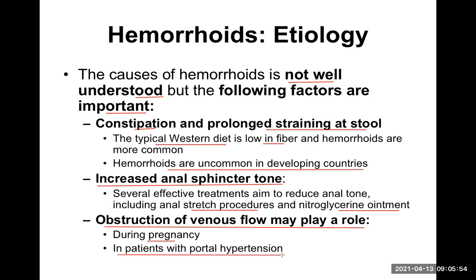Another important cause is portal hypertension, which can be caused by three ways: portal vein thrombosis; cirrhosis of the liver, which is the hepatic cause; and hepatic vein obstruction, also called hepatic vein thrombosis or Budd-Chiari syndrome. In any of these conditions, portal vein pressure is elevated. Since the superior rectal vein drains into the portal vein, the venous cushions we are discussing become enlarged. This is the mechanism.